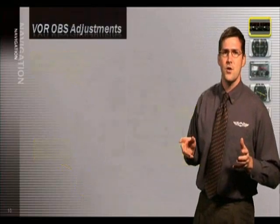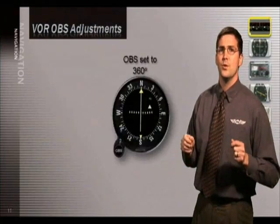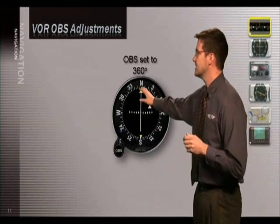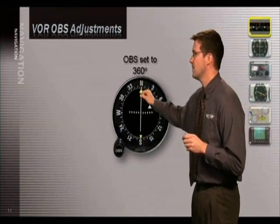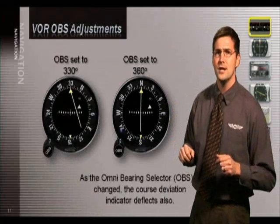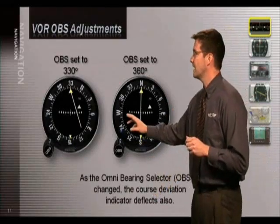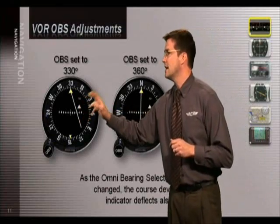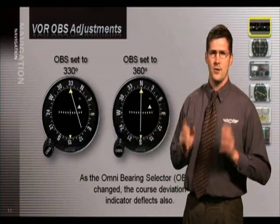Assuming you are directly south of the VOR station flying north with the OBS set to 360 degrees, the needle is centered. Now if you set the OBS to 330 degrees, the needle is deflected to the right so you can intercept the 330 degree radial.